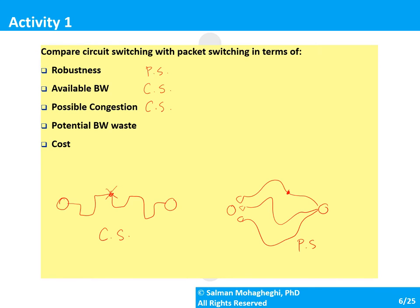For potential bandwidth waste, in circuit switching the circuit is yours whether you use it or not — if you stay silent, you're not using the bandwidth efficiently but it remains reserved. In packet switching, unused bandwidth is available for others, so packet switching is superior here. Regarding cost, circuit switching provides more bandwidth and no congestion, but at the expense of being more costly. Packet switching, where no resources are reserved beforehand, is less expensive.